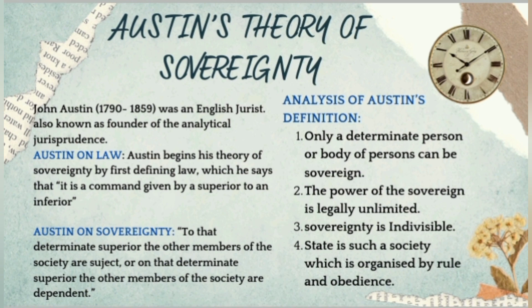John Austin, who lived from 1790 to 1859, was an English jurist and founder of analytical jurisprudence. He defined law as a command given by a superior to an inferior, referring to one ruler or emperor. He says that if a superior gives a command, the inferior should obey it. Regarding sovereignty, Austin says there is a determinate human superior to whom all other members of society are subject and on whom they are dependent.